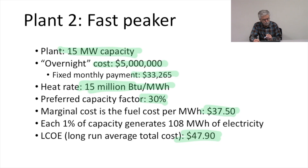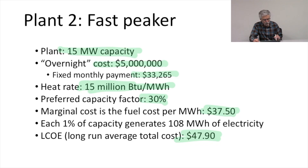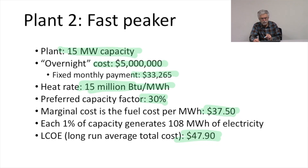Each 1% capacity generates 108 megawatt hours of electricity. The levelized cost of energy from this power plant — which is the long-run average total cost at the anticipated 30% capacity factor — is $47.90.